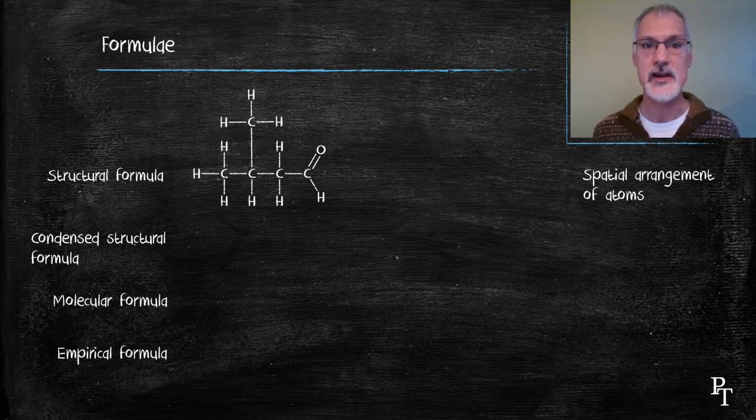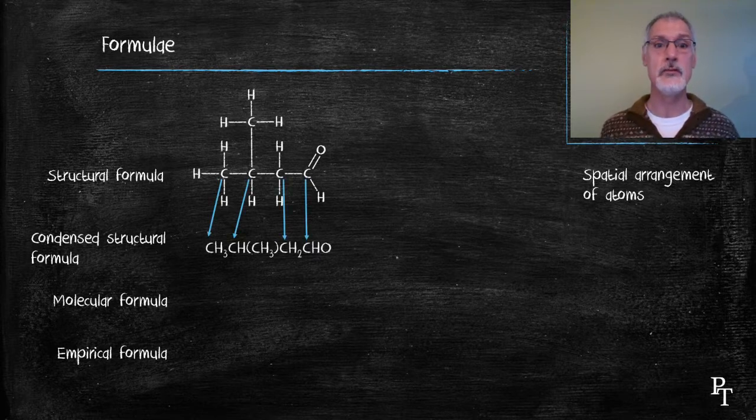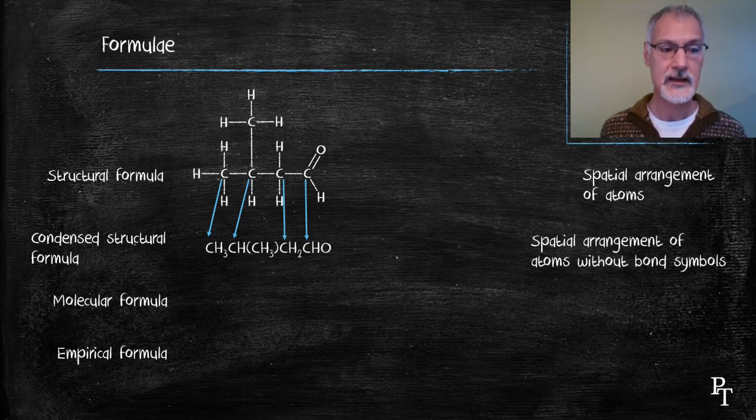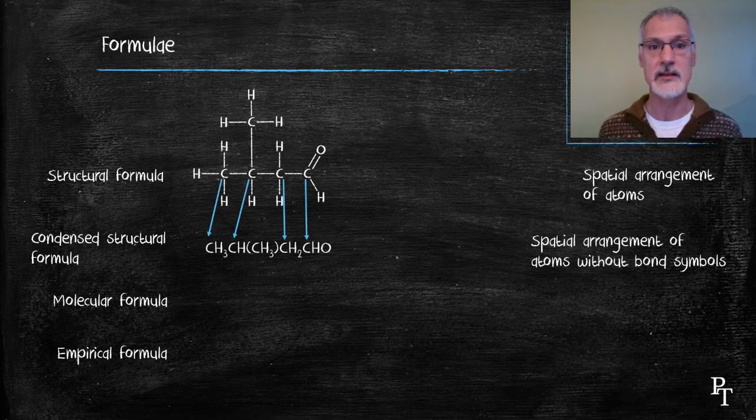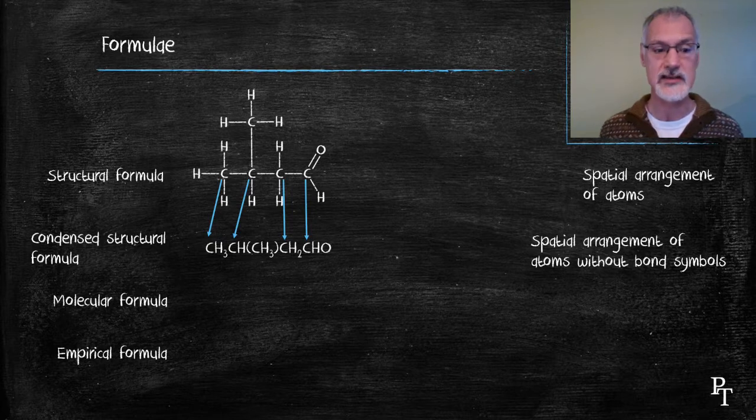This can then be expressed in what's called a condensed formula. And the purpose of a condensed formula is to remove the bonds and therefore allow it to take up less space. Every carbon is followed by what's attached to it. So, for instance, the second carbon in this particular molecule has attached to it a hydrogen and a CH3 group.